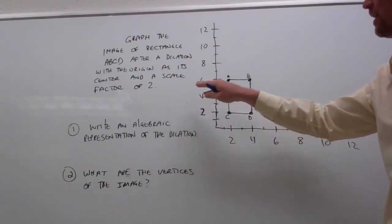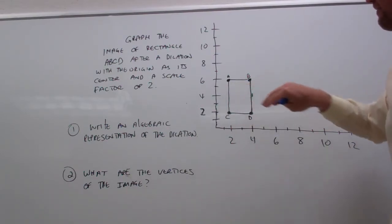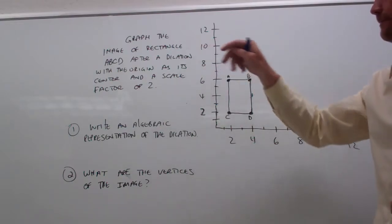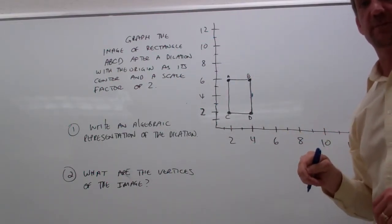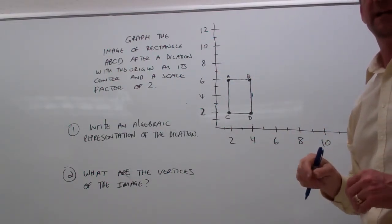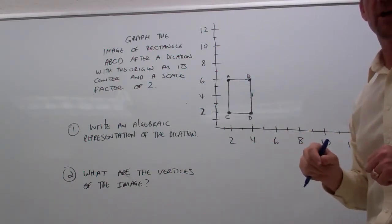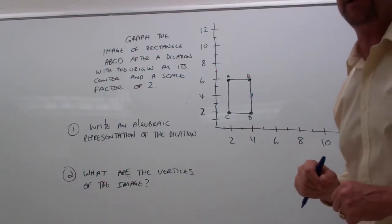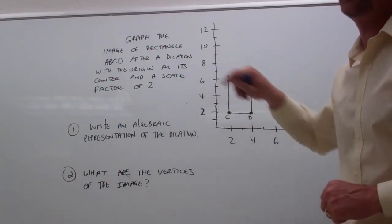We're going to graph ABCD dilation, which remember is a type of transformation. Dilations can either make an image bigger, which we call an enlargement, or make an image smaller, which we call a reduction. They are both dilations, different types of transformation.